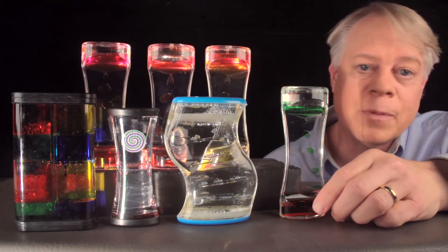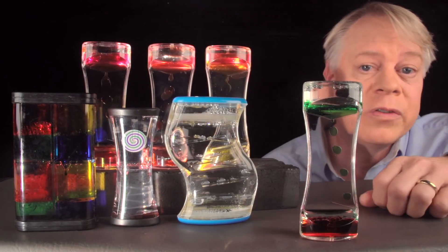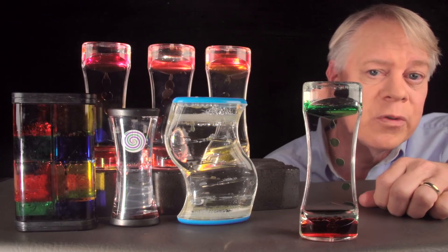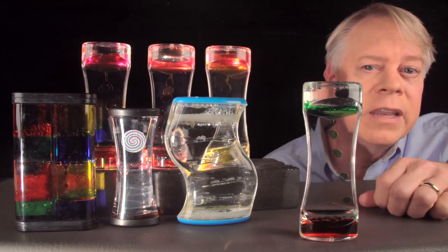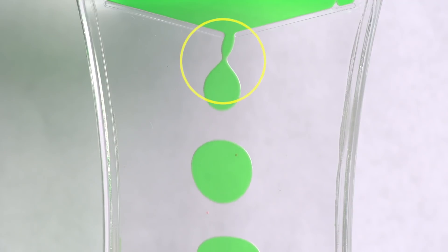To understand how engineers control drop size, let's start with this toy, which shows the essentials of drop formation. In it, a narrow stream of liquid called a jet flows from the opening and then becomes circular as it flows toward the bottom of the toy.